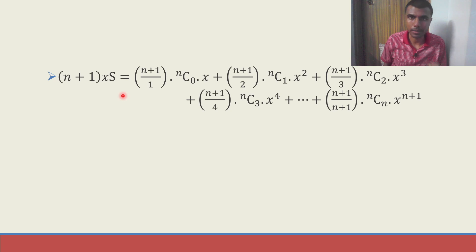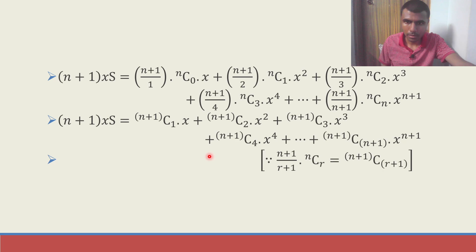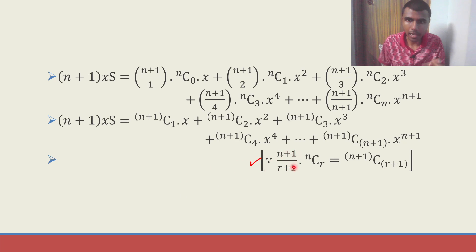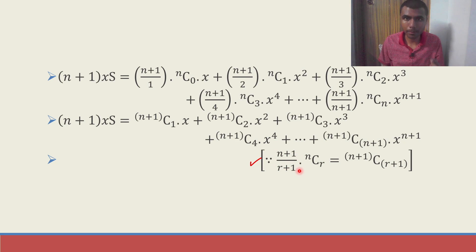Now listen carefully — this is a very important step. In binomial theorem there is a formula: (n+1) by (r+1) into nCr is nothing but (n+1)C(r+1). Whenever we have a pattern like this, (n+1) by (r+1) into nCr, it equals (n+1)C(r+1).